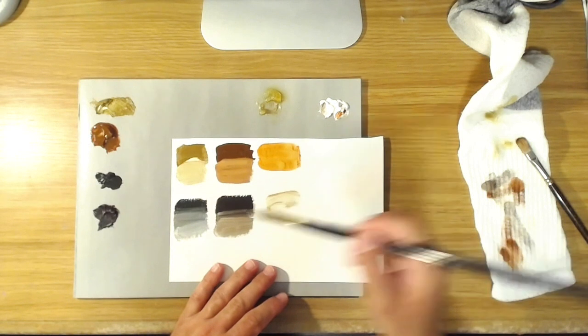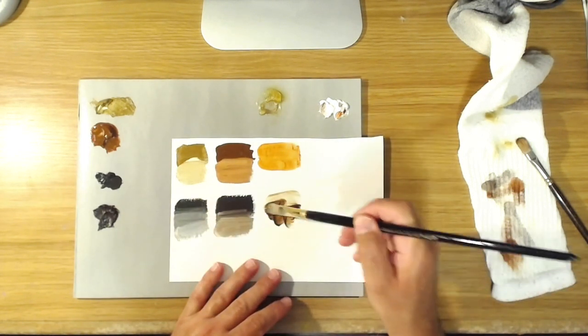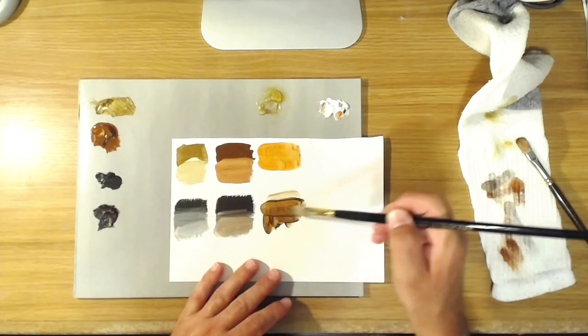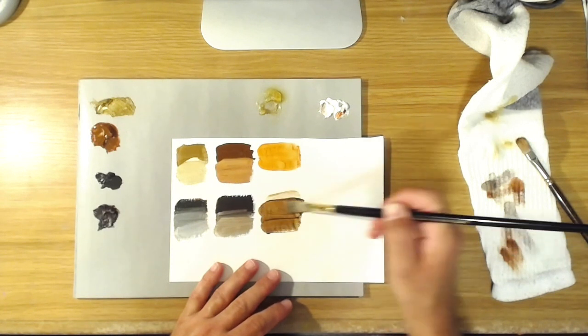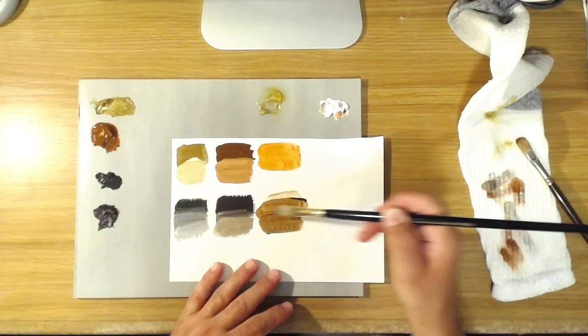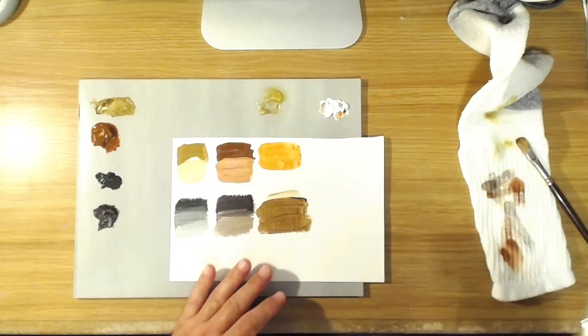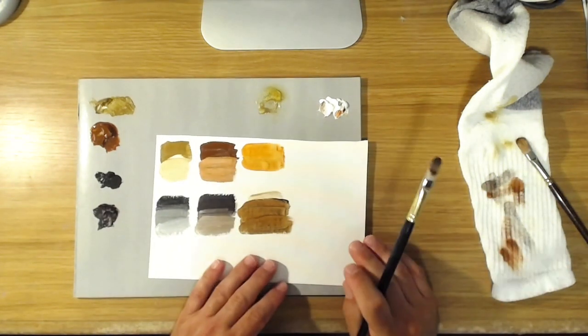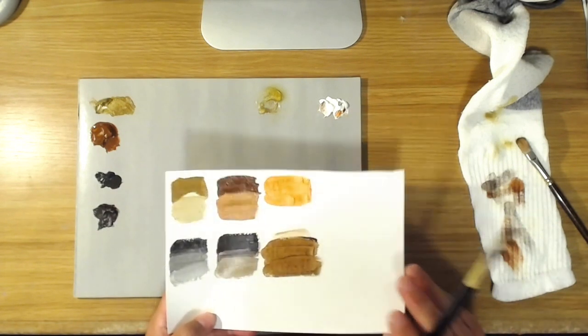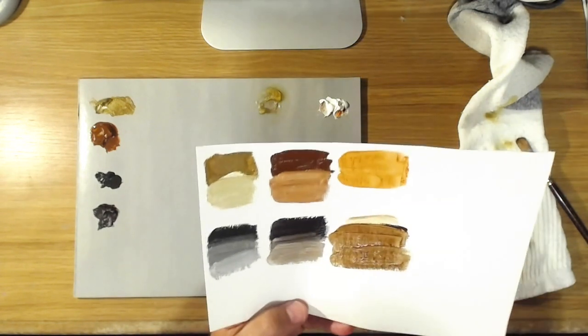And again, you can use burnt umber as a glazing color because it's more transparent, and it makes that again beautiful sort of rich coffee chocolate brown color when you glaze with it.